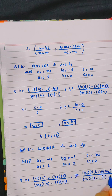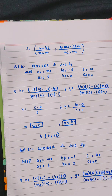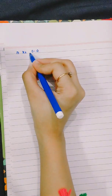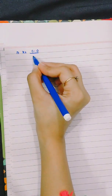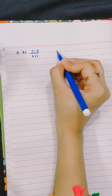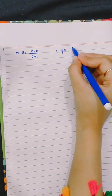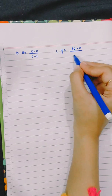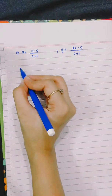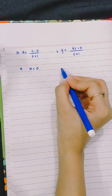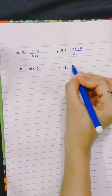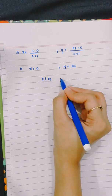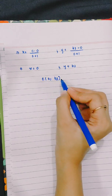x = 0 / (0 + 1) = 0 and y = b2 / (0 + 1) = b2. So the coordinates of C are (0, b2).